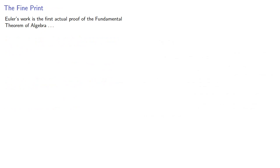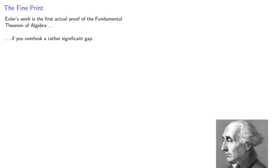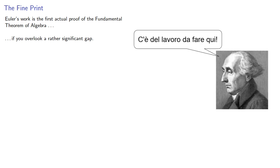Euler's work is the first actual proof of the fundamental theorem of algebra, if you overlook a rather significant gap. Completing that gap would be the work of Lagrange a little bit later on. In the meantime, we'll leave the reader to figure out where that gap is. And here's a hint: it's not his assumption that the roots exist.